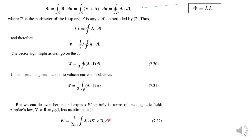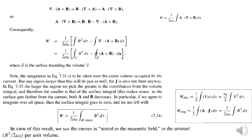Now we replace J using Ampere's law. What is Ampere's law in differential form? Del cross B is equal to mu zero J. So J equals del cross B divided by mu zero. We substitute this into the energy equation. We also use the vector identity: del dot (A cross B) equals B dot (del cross A) minus A dot (del cross B).